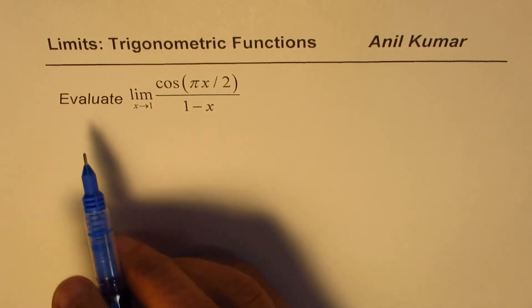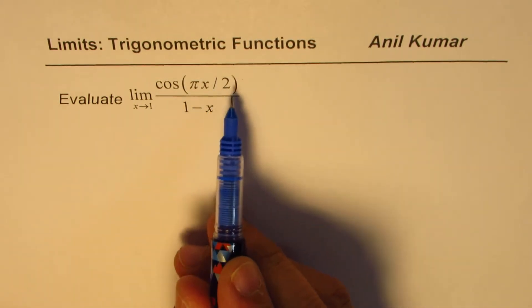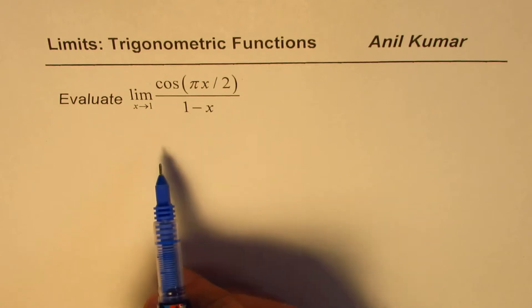The question here is to evaluate limit when x approaches 1 for cos(πx/2) divided by 1 minus x.